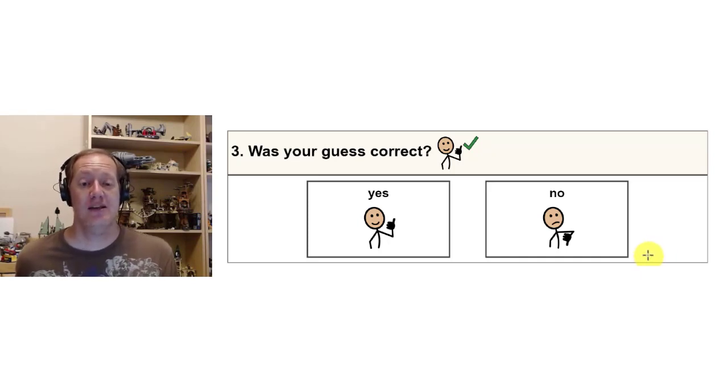Part of science is trying to figure out an answer to a problem. And so that's why we come up with our guess, and sometimes our answer is wrong. And that is perfectly acceptable.